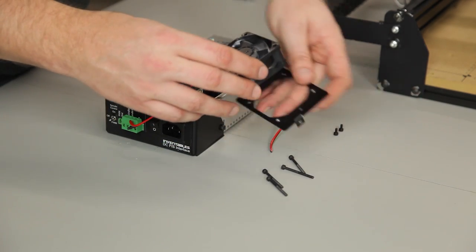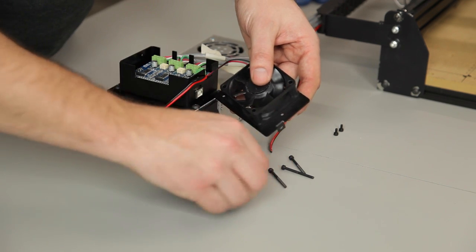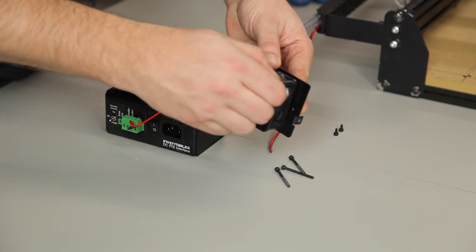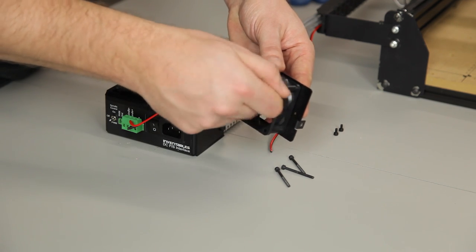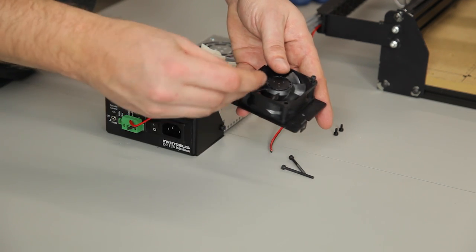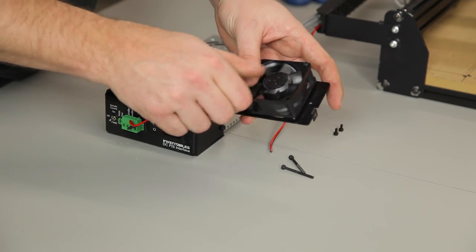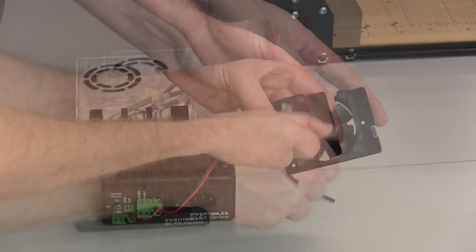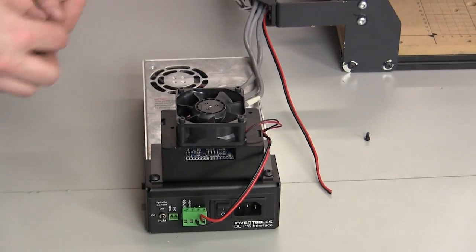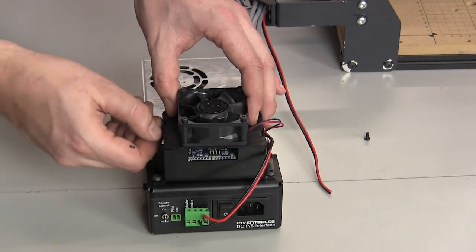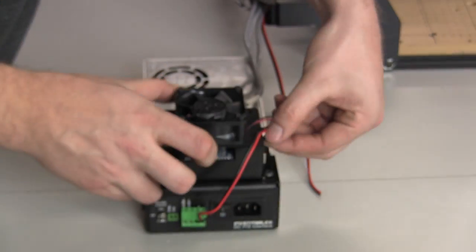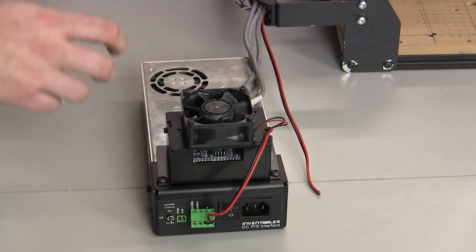Now we'll put the top of the G-Shield enclosure on. First mount the 24 volt fan to this top. You'll notice there are threaded inserts in the top specifically for the screws that come through the fan. Then attach the top of the G-Shield enclosure to the bottom with two small M3 socket head cap screws.